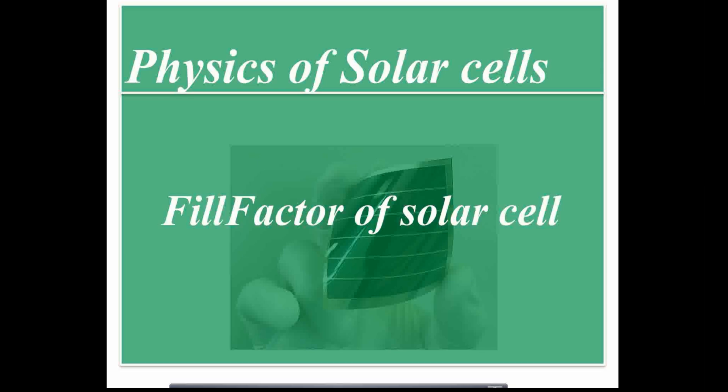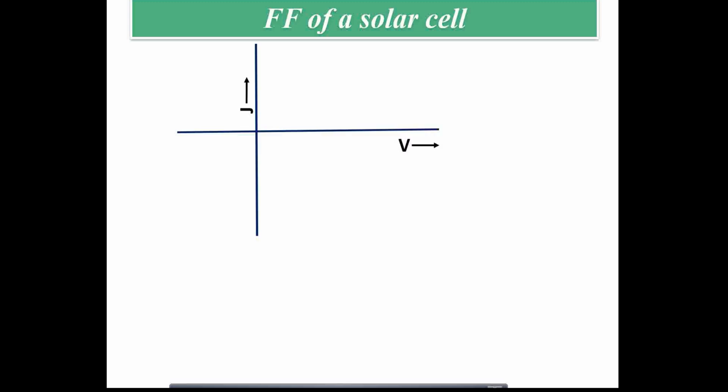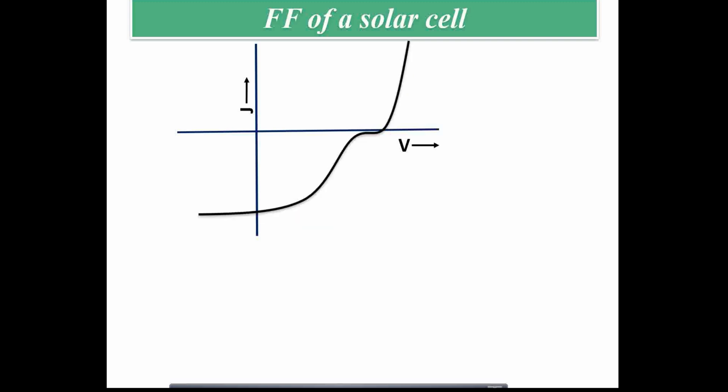Today I will explain the physical meaning or physical significance of fill factor in solar cells. Looking at the JV curve of a solar cell, we can observe certain types of behavior — including an S-type kink.